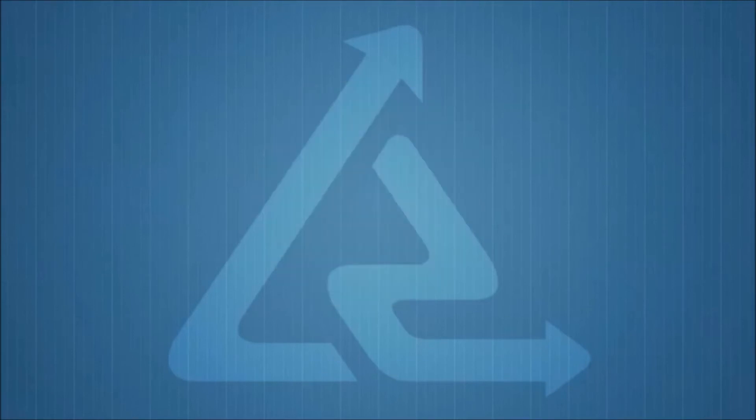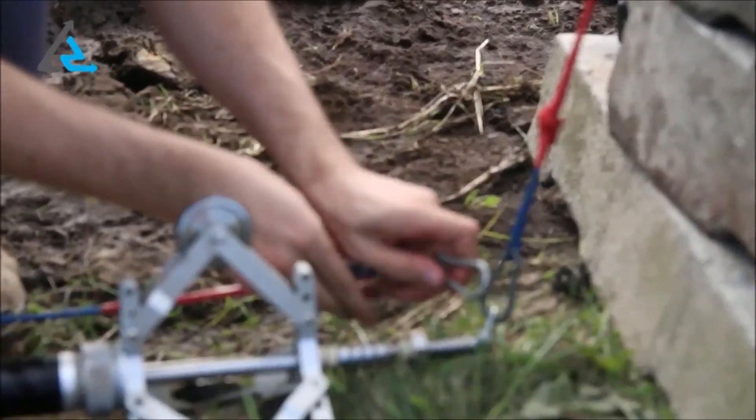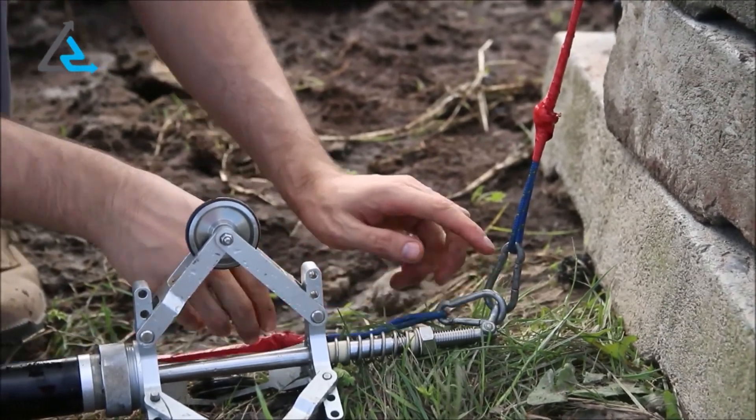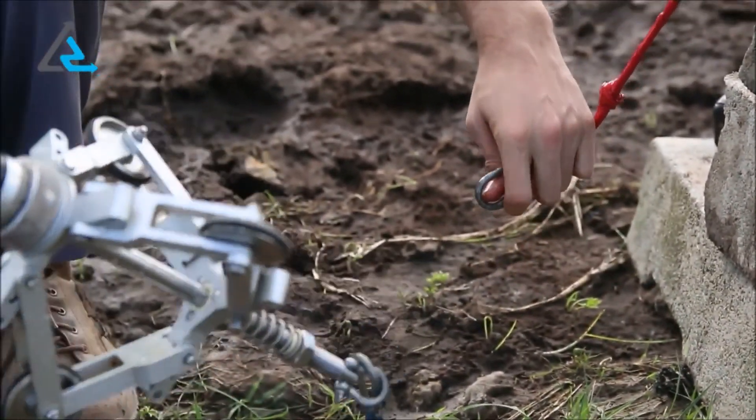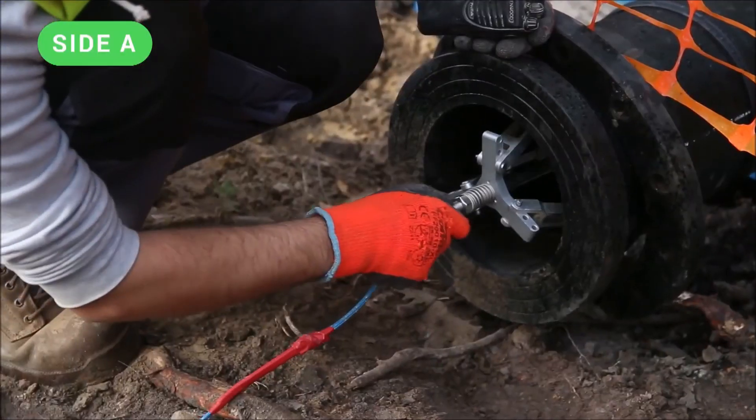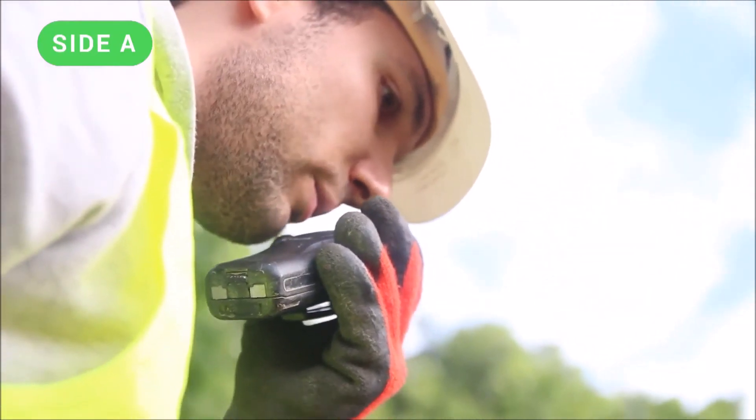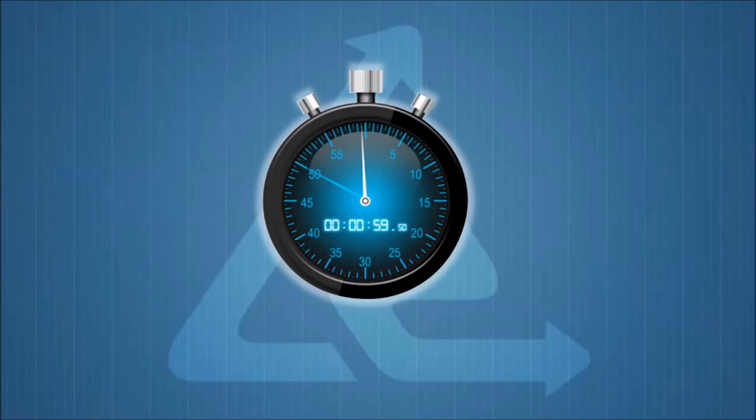After calibration, remove the probe from the pipe, turn it around and reinsert it into the pipe. Then, the process of pulling it to the B point and back is repeated.